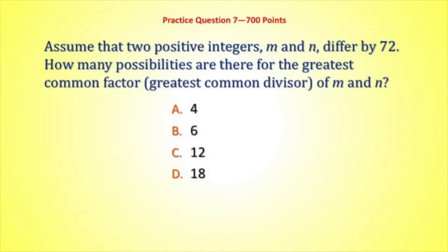Here comes question 7 for 700 points. Assume that two positive integers, m and n, differ by 72. How many possibilities are there for the greatest common factor, or greatest common divisor, of m and n?